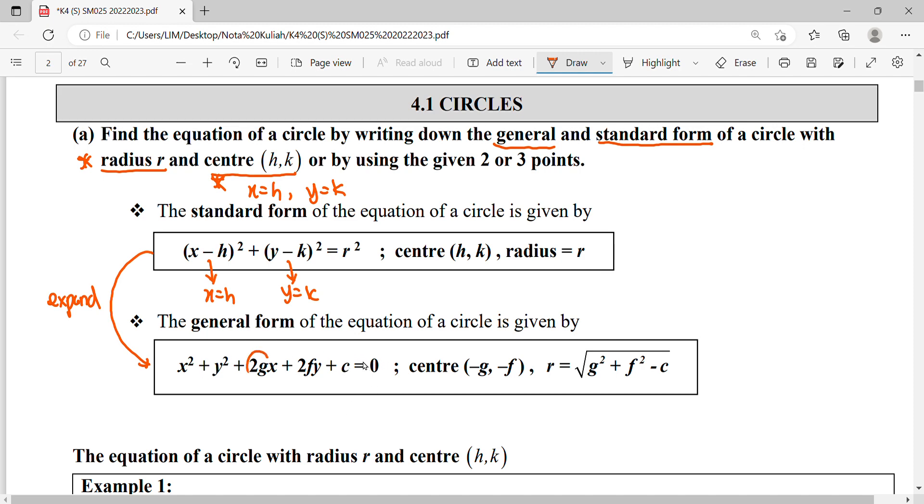From this general form you can find out what is your g, what is your f, and what is your c in order to get back your center and radius. If you want to change back from general form to standard form, we're going to use completing the square.